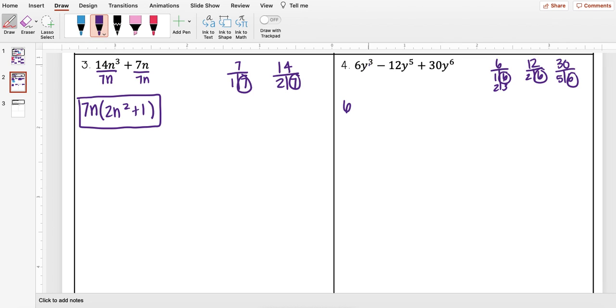My smallest exponent for my y's is 3, so I have y cubed. So now I'm going to divide every term by my GCF. So 6 divided by 6 I get 1. y cubed divided by y cubed I also get 1, and so this is just going to be a 1.